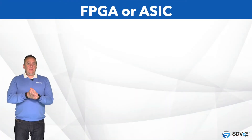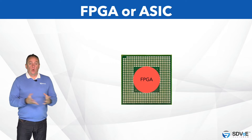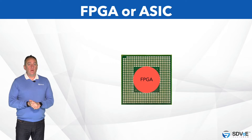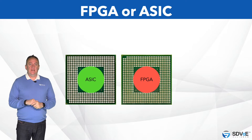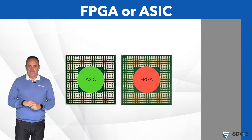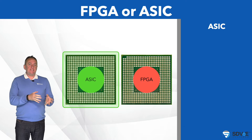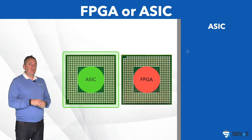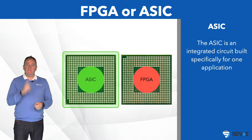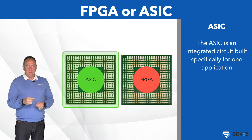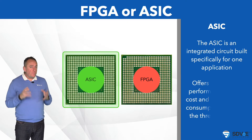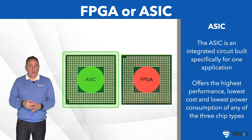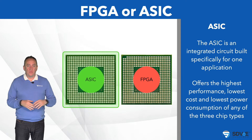Turning to the other choices we have the FPGA or field programmable gate array and the ASIC or application specific integrated circuit. The ASIC as its name implies is an integrated circuit built specifically for one application. It could be optimized to perform the application with the highest performance, the lowest cost and the lowest power consumption of any of the three chip types.